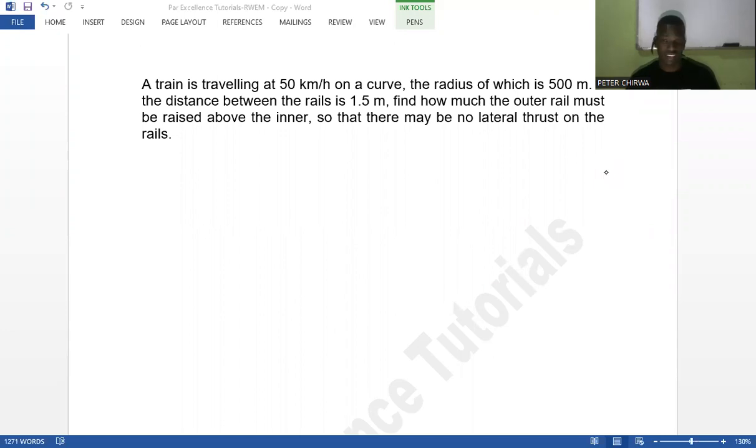All right, a train is traveling at 50 kilometers per hour on a curve, the radius of which is 500 meters. If the distance between the rails is 1.5 meters, find how much the outer rail must be raised above the inner so that there may be no lateral thrust on the rails.